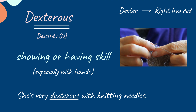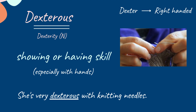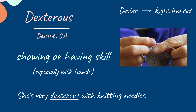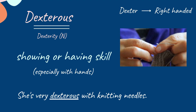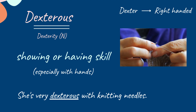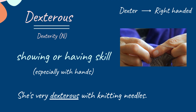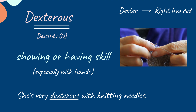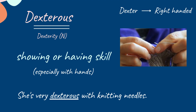Dexterity is the noun form of the word. For example: she is very dexterous with the knitting needles. Here, as she is skillful with her hands, we have used the word dexterous.